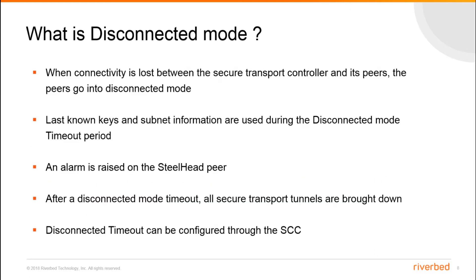There is something called disconnected mode in secure transport. When connectivity is lost between the secure transport controller and its peers, the peers go into disconnected mode. The last known keys and subnet information are used during the disconnected mode timeout period. An alarm is raised on the steelhead pair when it enters disconnected mode. After a disconnected mode timeout, all secure transport tunnels are brought down. This can be configured through SCC.